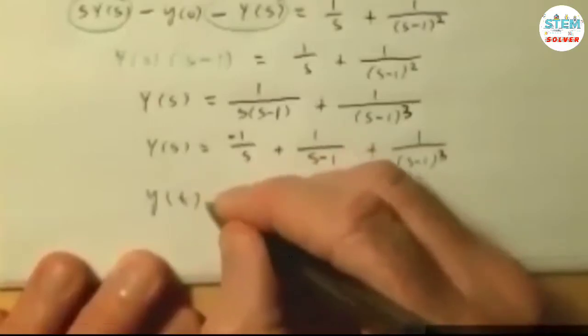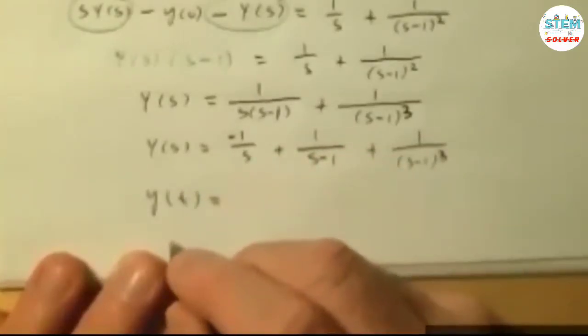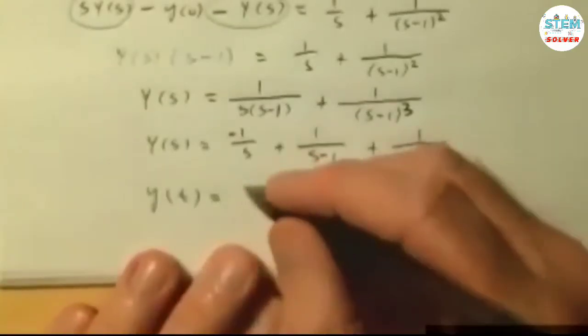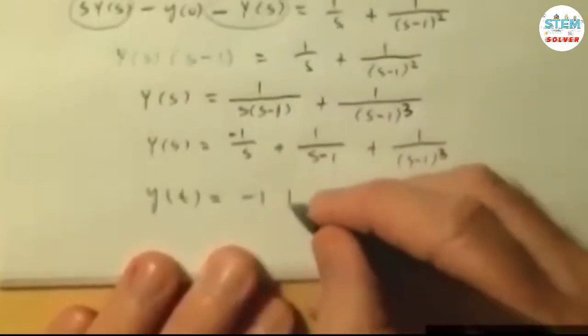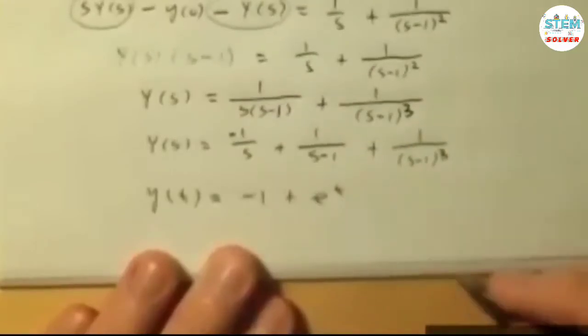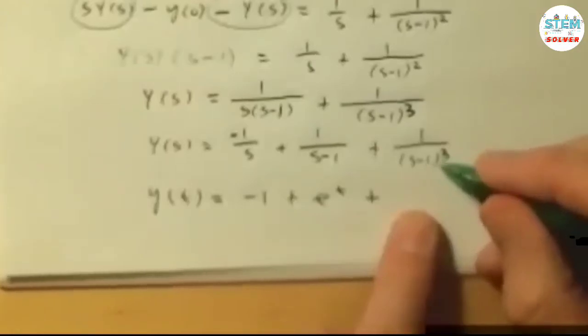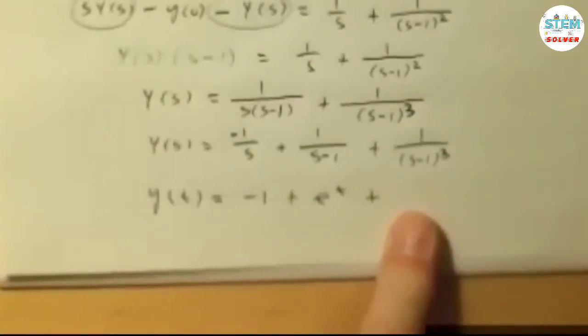Okay. Let me take the inverse Laplace transform, so we end up with this. y of t is going to equal negative 1 plus e to the t. Plus, now this one...